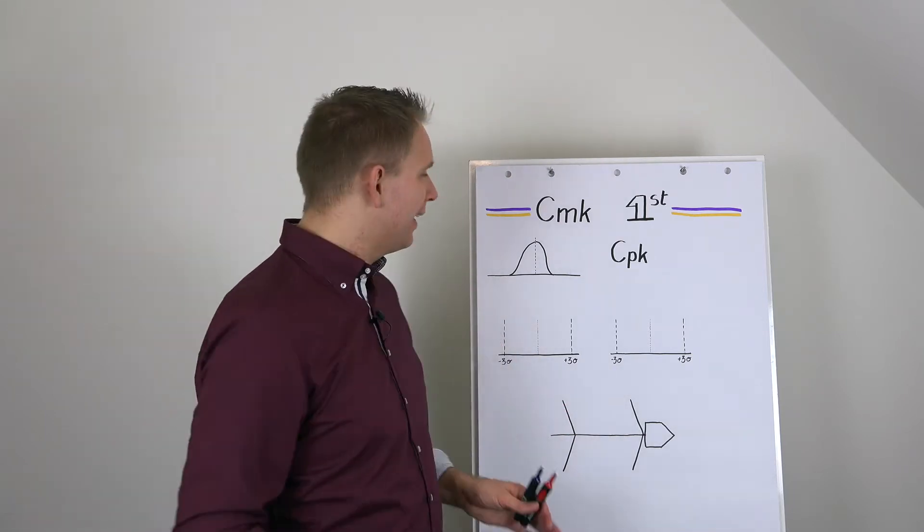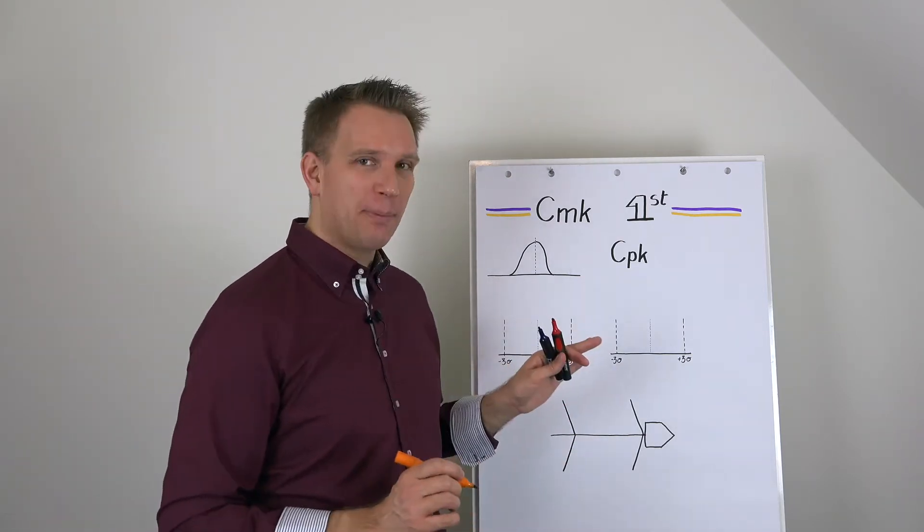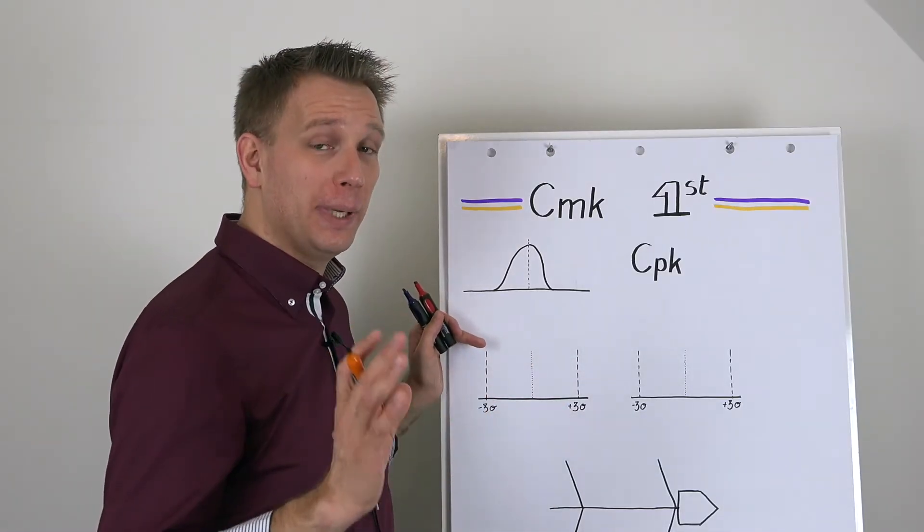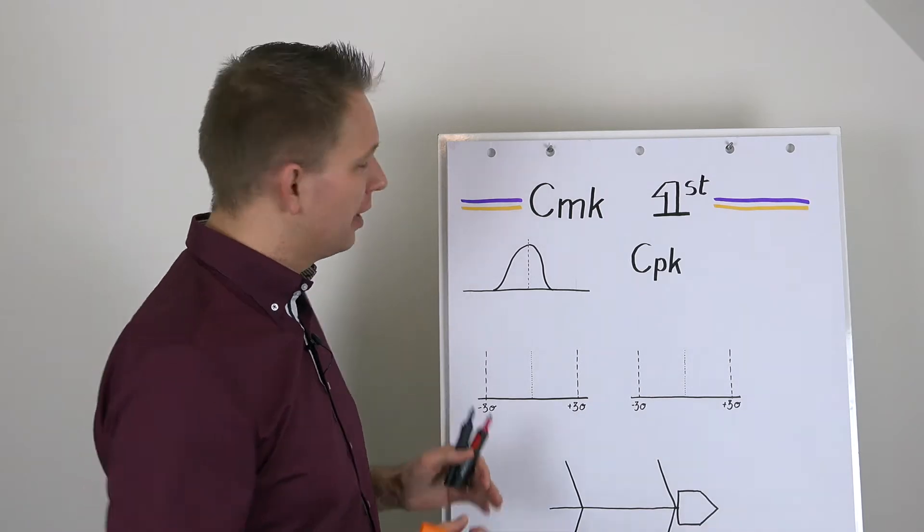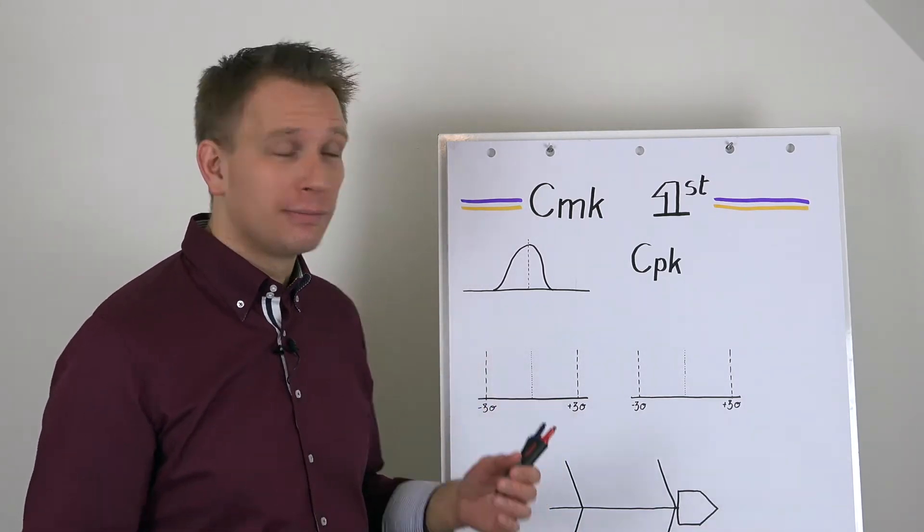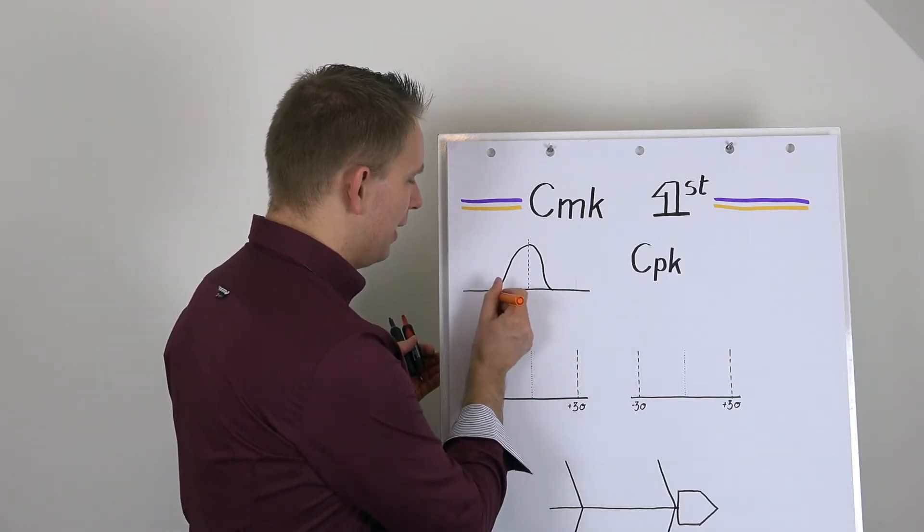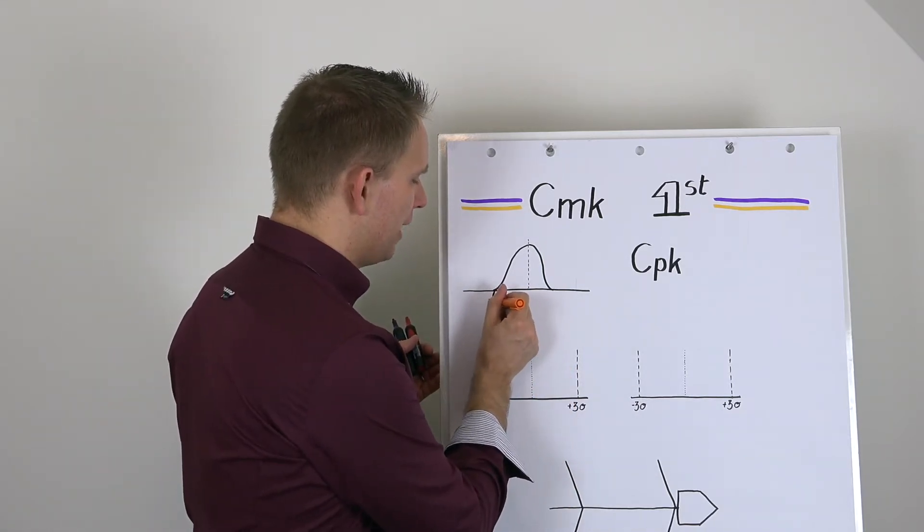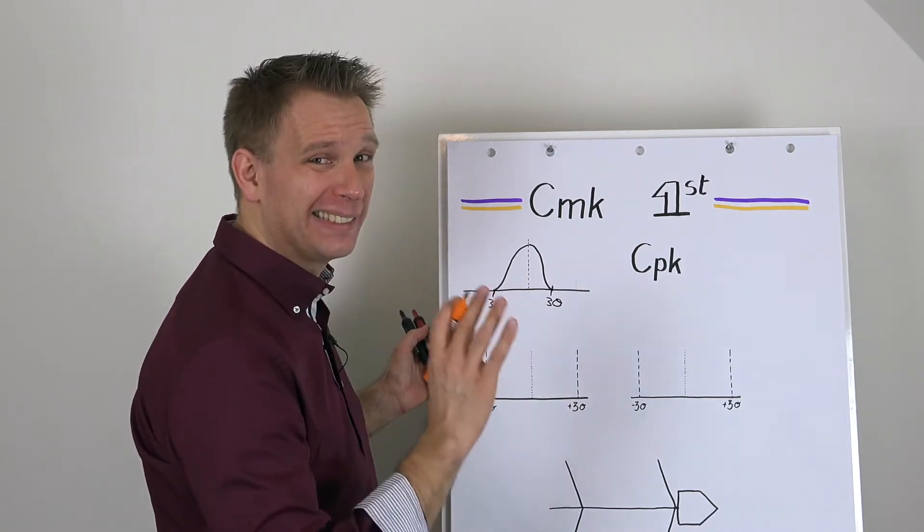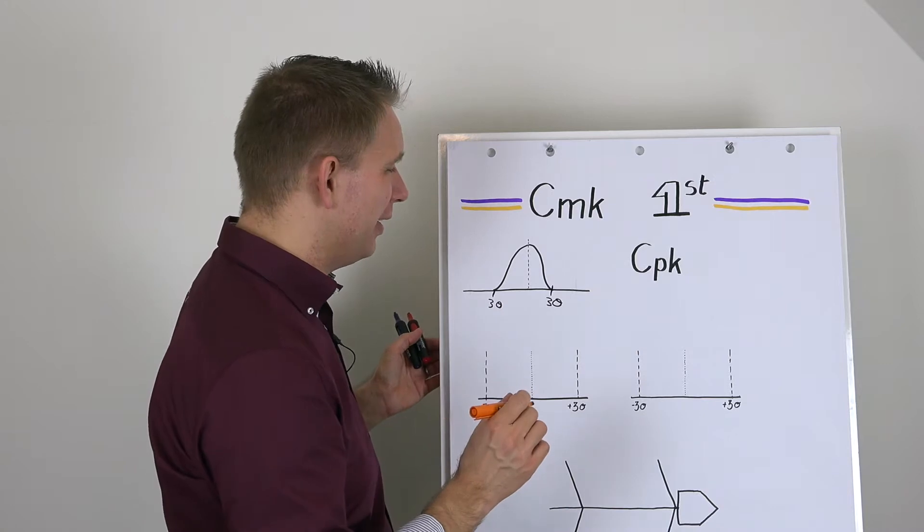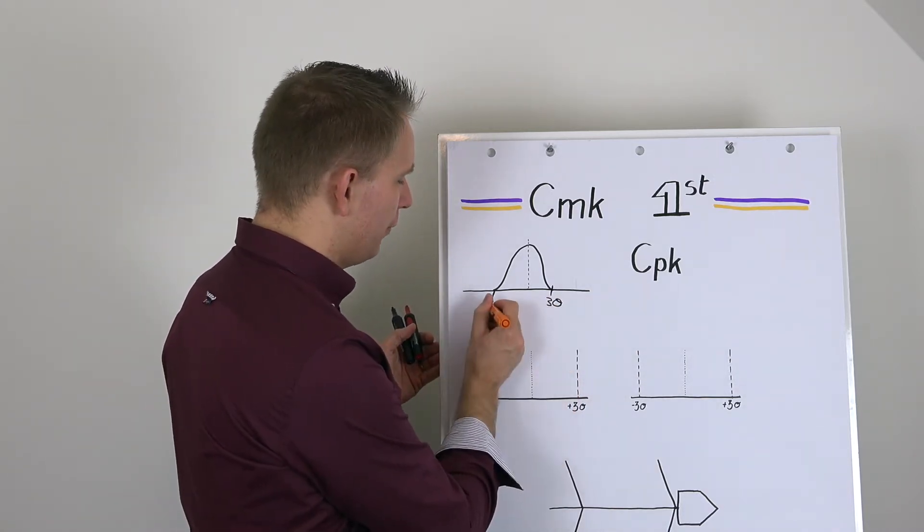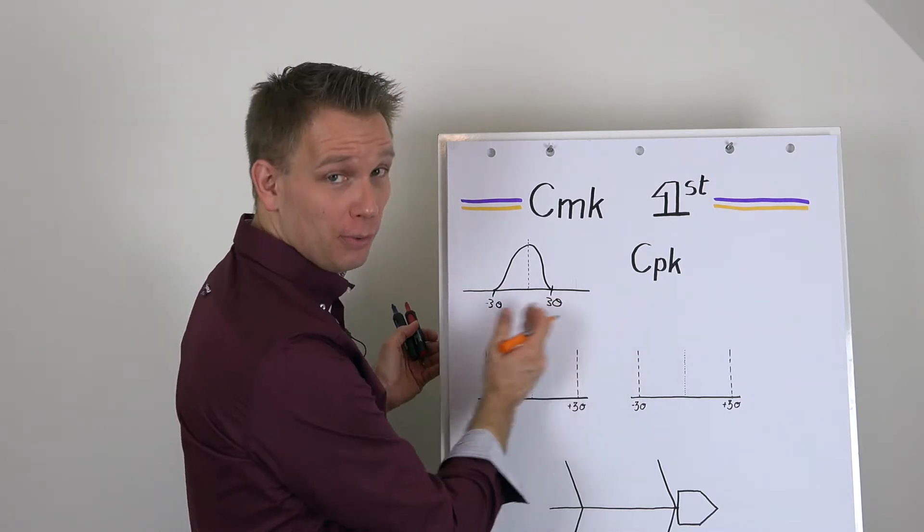But before we do that, just a little recap about Six Sigma. So how much spread as compared to your specification limits are you allowed to have to reach the Six Sigma level? And if you just said three sigma, then I'm afraid you're going to have to push a little bit harder. What Six Sigma is trying to do is not to get from minus three to plus three, so six sigma.